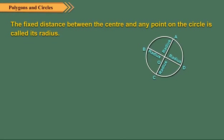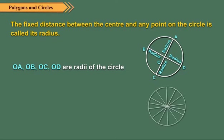The fixed distance between the center and any point on the circle is called its radius. So OA, OB, OC and OD are radii of the circle. Obviously, all radii are equal. A circle can have infinite numbers of radii, but they all are equal in length.